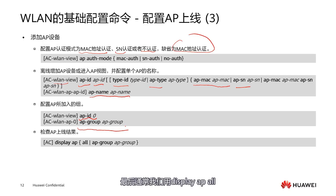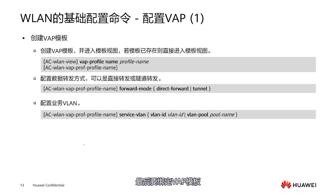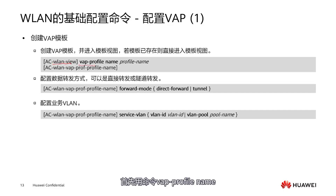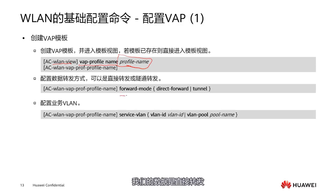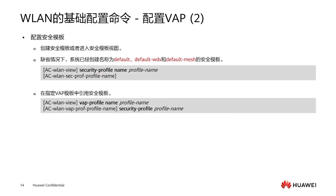We use 'display AP all' to see all online APs and check if they are in normal mode. After the AP goes online, we need to start creating a VAP template. Our APs or AP groups ultimately need to be bound to a VAP template. Under the WLAN view, use the command 'VAP profile name' followed by a profile name we define to create a template. In the template, we can choose whether our data is directly forwarded or tunneled. The second step is to configure the service VLAN, which is very important to ensure the service is activated.